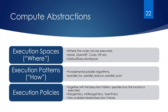Execution policies, combined with execution patterns, specify how a function of interest will be executed. For example, the range policy lets you say you want to iterate from 0 to N in parallel, and COCOS takes care of that. There are also the MDRange policy and team policy, which are more advanced. And NEST execution policies are responsible for parallelizing work that is already within a parallel region.